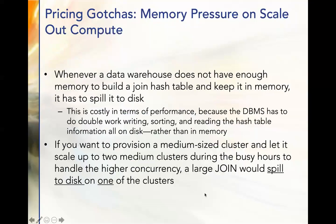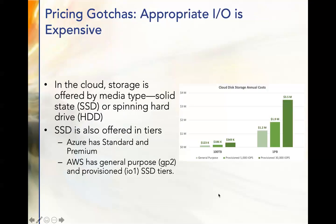There's also memory pressure on scale-out compute. Whenever a data warehouse does not have enough memory to build a join hash table and keep it in memory, it has to spill to disk. This is costly in terms of performance because the database has to do double work — writing, sorting, and reading — rather than having it all in memory. You can't just provision a medium-sized cluster and let it scale up to two during busy hours, because a large join would spill to disk on one of the clusters in order to handle the concurrency. Getting into the appropriate I/O tier is also expensive, and all these platforms now have different I/O tiers for your workload.